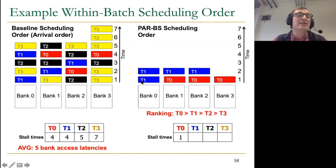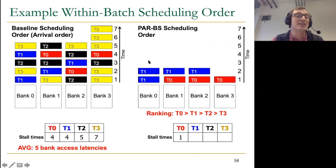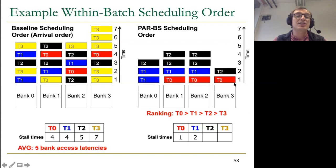Thread two is filling some of the gaps because thread one doesn't have a request in certain time units. So thread two's requests can be serviced during those gaps. This is the key benefit of the prioritization order — it avoids wasting bandwidth while still respecting the rank ordering within the batch. This parallelism-aware batch scheduling significantly reduces average stall time compared to the baseline scheduling order.